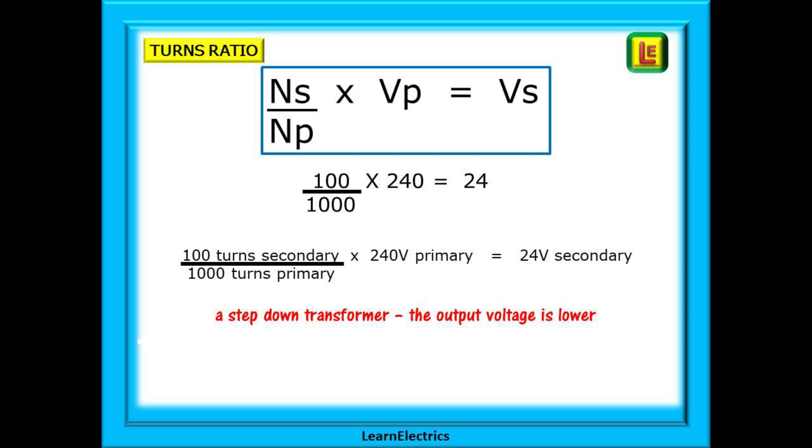Our secondary side has 100 turns, and the primary side 1000 turns, and that will give us 0.1. Multiply this by the primary voltage of 240 volts, and we have a secondary voltage of 24 volts. It's that simple to do, and this is an example of a step-down transformer.